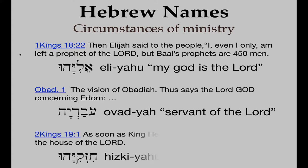Another example is in 2 Kings 19:1 — the famous King Hezekiah. It says, 'As soon as King Hezekiah heard it, he went into the house of the Lord.' What does the name Hezekiah mean? Chizkiyahu — it's related to the word Chazak, which means strong, with that same ending Yahu. So basically it means 'the Lord is strong.' Certainly that was needed and fitted King Hezekiah, who stood up against the siege of the Assyrian army in Jerusalem.